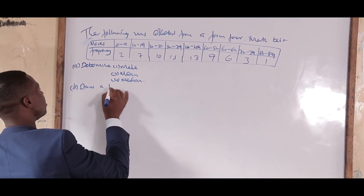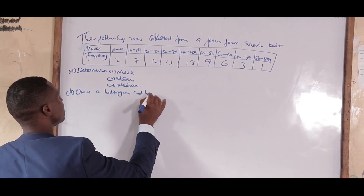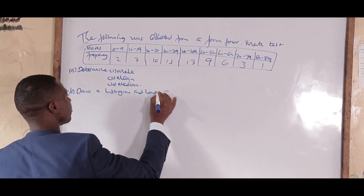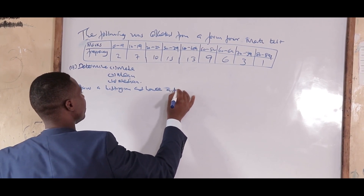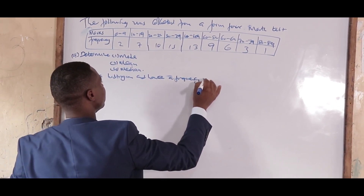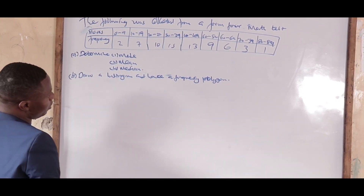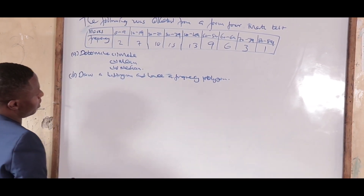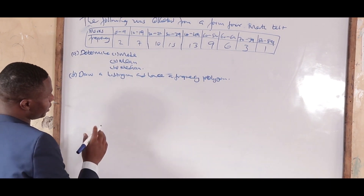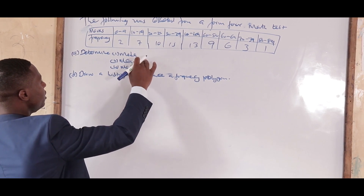Part B asks you to draw a histogram and hence a frequency polygon. To find the mode, mean, and median, I need to come up with a distribution table from this data.